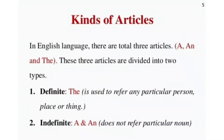Kinds of Articles. In the English language, there are total three articles: a, an, and the. These three articles are divided into two types: definite article, i.e., 'the', and indefinite articles, i.e., 'a' and 'an'.